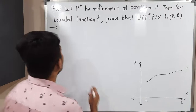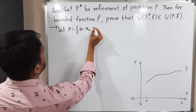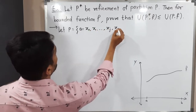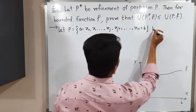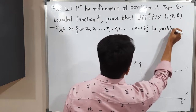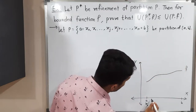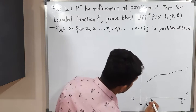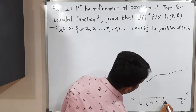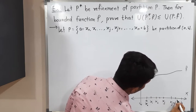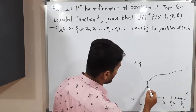Let us take partition P first. Let P = {a = X₀, X₁, ..., Xⱼ, Xⱼ₊₁, ..., Xₙ = b} be the partition of closed interval [a, b]. In the diagram, this is X₀, then X₁, X₂, and so on, where we will have Xⱼ, and after that Xⱼ₊₁ as the next point, and the final point will be Xₙ.